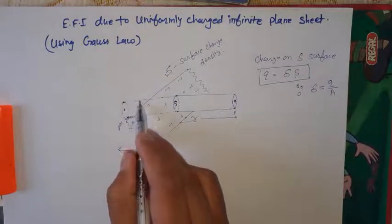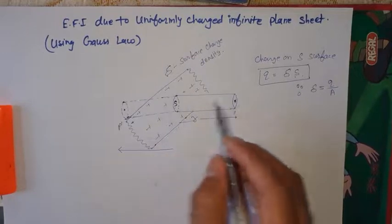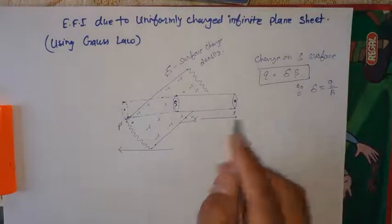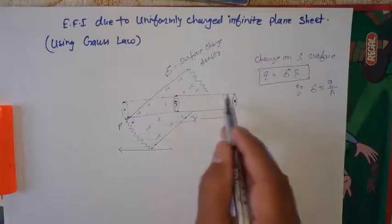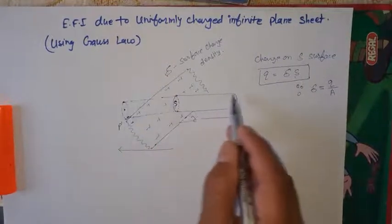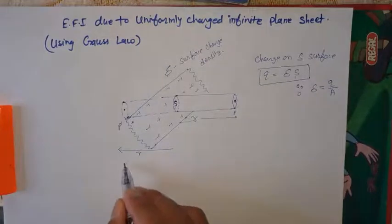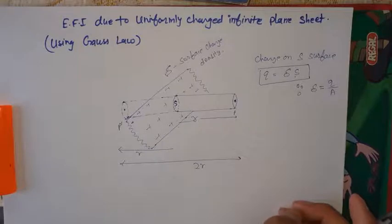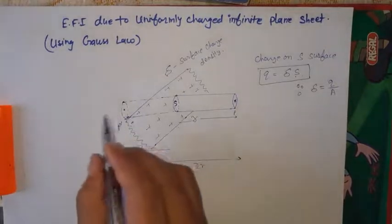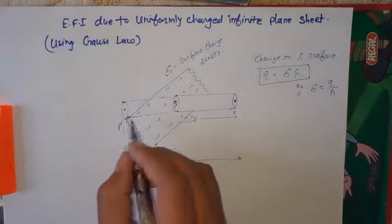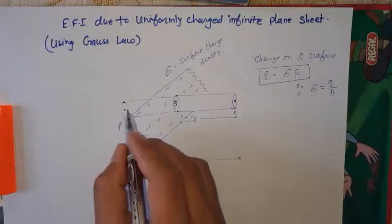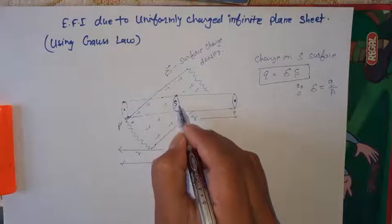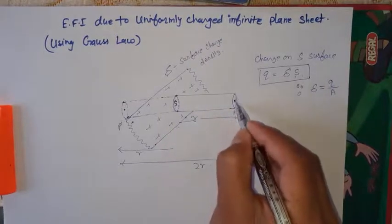For this purpose, I have taken a Gaussian surface. The Gaussian surface we need is a cylindrical Gaussian surface. This is the total length of the Gaussian surface. The area of the cross-section at one end is the same area as at the other end.